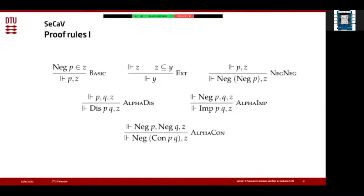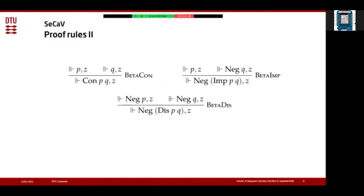The remaining rules for connectives are divided into categories using Smullyan's notation. We have alpha rules, which stay on one proof branch — this is for disjunction, implication, and negated conjunction, where we turn those into a disjunction at the meta level inside the sequent. We also have beta rules which split into two branches: for example, to prove the conjunction of P and Q we must prove P in one branch and Q in a separate branch. Similar things apply for negated implication and negated disjunction.